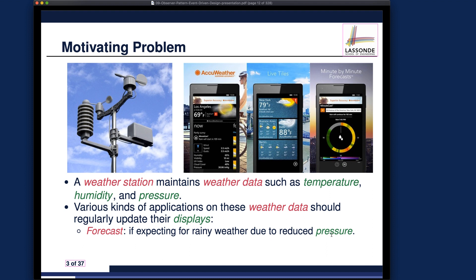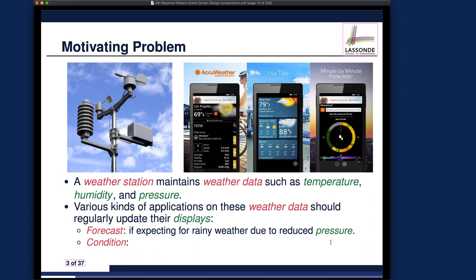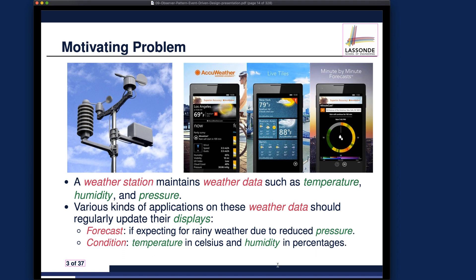The forecast app only worries about whether to expect rainy weather due to reduced pressure — based on basic physics, a drop in pressure indicates a higher likelihood of rain. The second app is a condition app, which tracks temperature in Celsius and humidity in percentages. The key point is that not every app needs to use all available weather data — each app selectively uses only the measures relevant to what it displays.